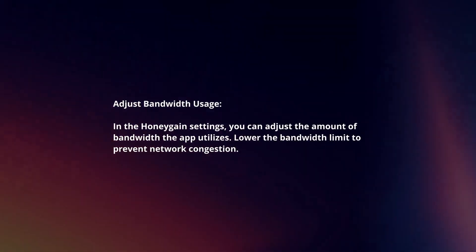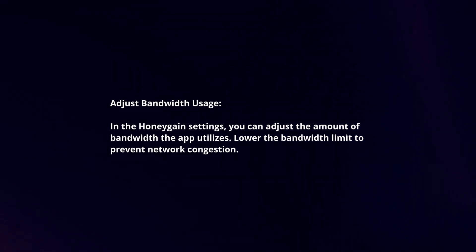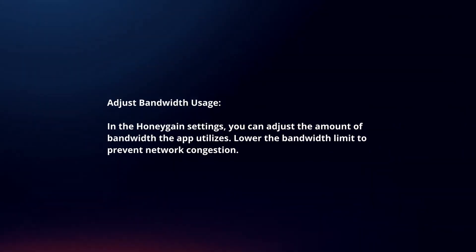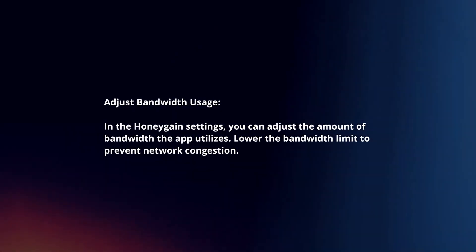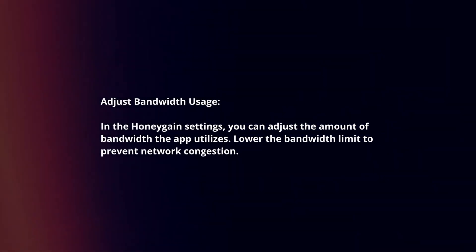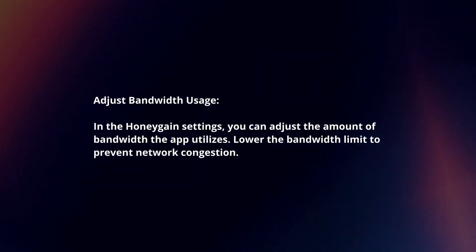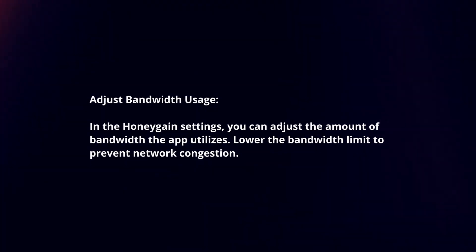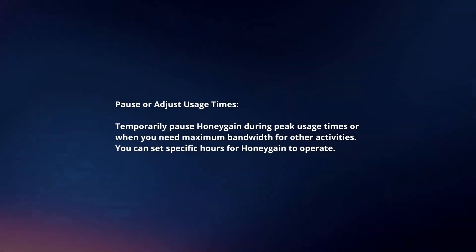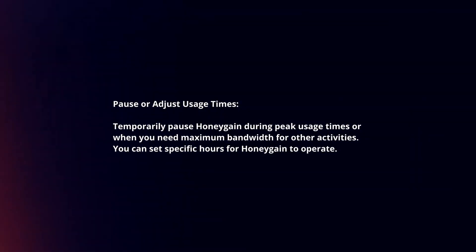Adjust bandwidth usage. In the Honeygain settings, you can adjust the amount of bandwidth the app utilizes. Lower the bandwidth limit to prevent network congestion.